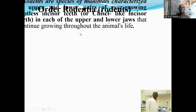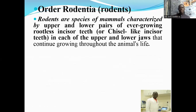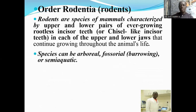Having discussed that overview, let us now look at the order Rodentia, which consists of the rodents. Rodents are species of mammals characterized by upper and lower pairs of ever-growing rootless incisor teeth — chisel-like incisors in each jaw that continue to grow throughout the animal's life. These rodent species can be arboreal or fossorial — found on top of trees or burrowing into the soil — and some are semi-aquatic.